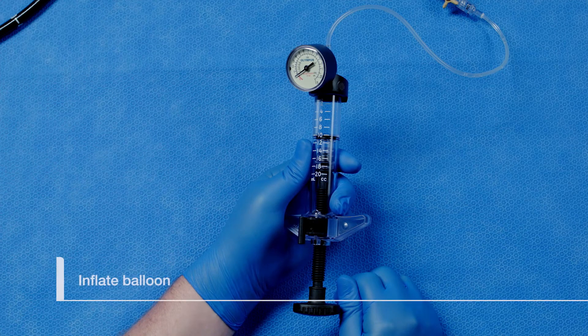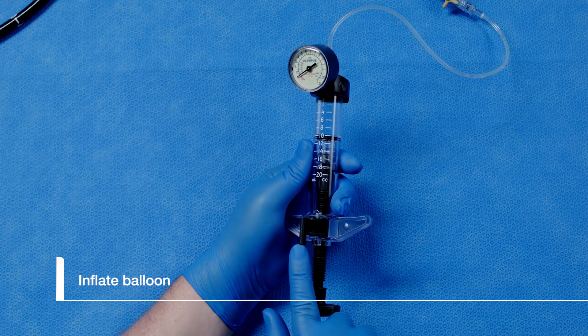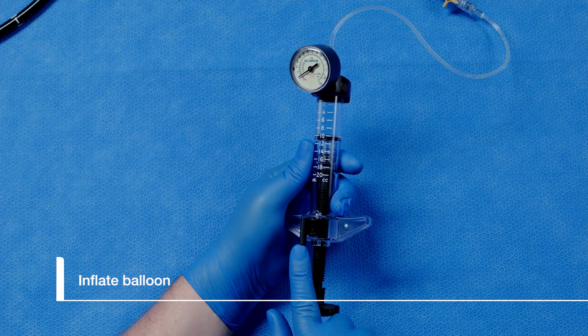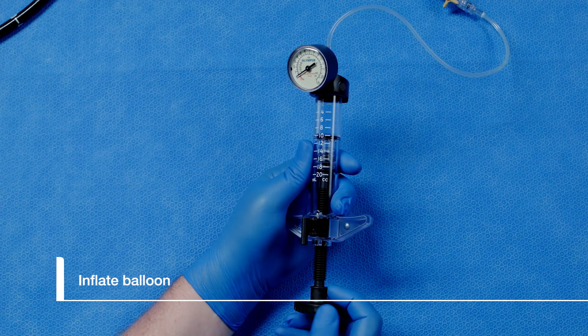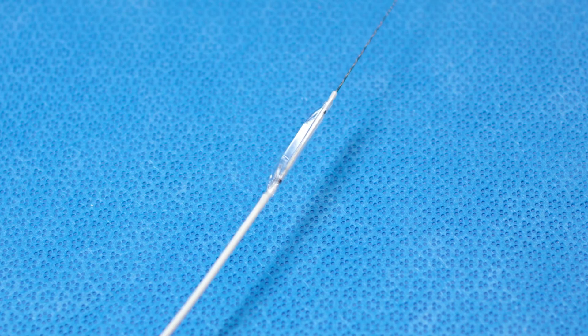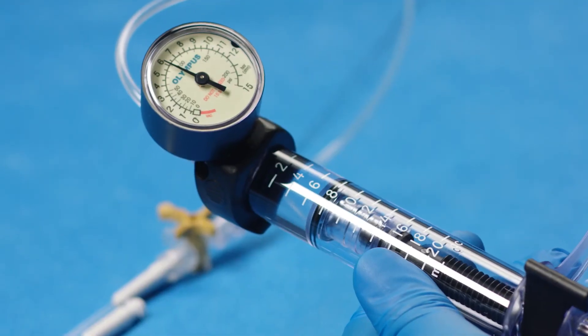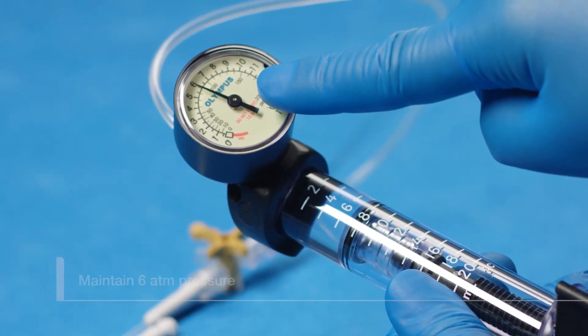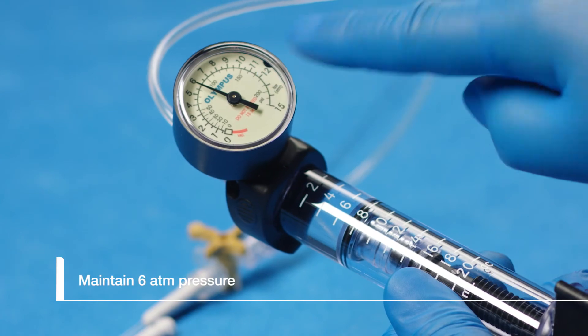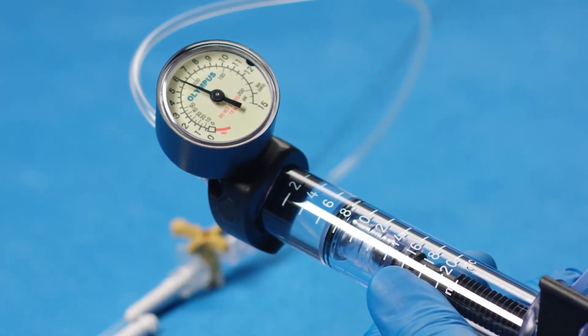Now that the balloon is in position, we can inflate. Flip the locking switch on the inflator to the center position. Slowly rotate the plunger clockwise to inflate the balloon. Rotate the plunger until the pressure in the balloon reaches six atmospheres. You will need to periodically adjust the plunger to maintain six atmospheres during dilation.